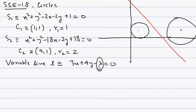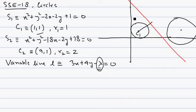We have to use two concepts here: one is the intersection between a line and circle, and the other is the position of a point with respect to a line from the straight lines topic. For this line to not intersect this circle, the distance of center C1 from this line should be more than the radius of the circle — so distance of (1,1) from this line should be more than 1.